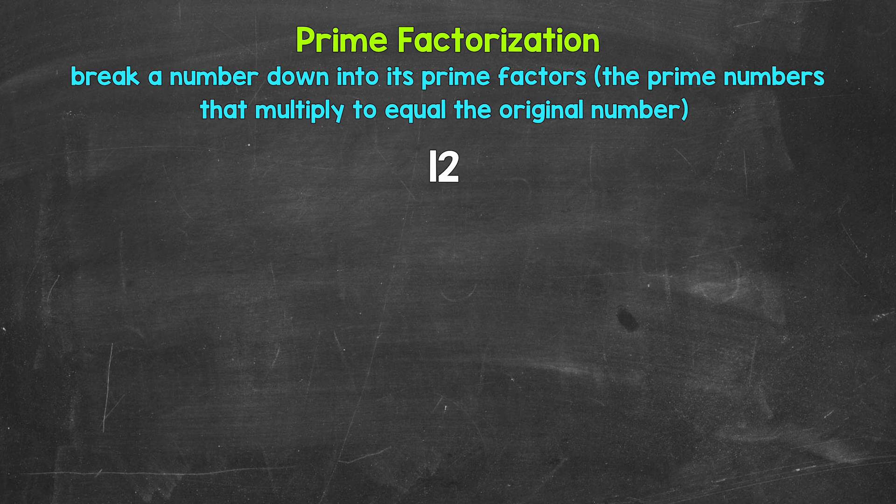So looking at 12, we need to start breaking this down by thinking of two factors, two numbers that multiply to give us 12. Well, 2 and 6 are factors of 12. 2 times 6 equals 12. So let's break 12 down into 2 and 6.